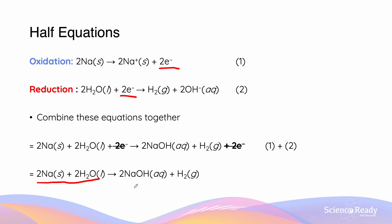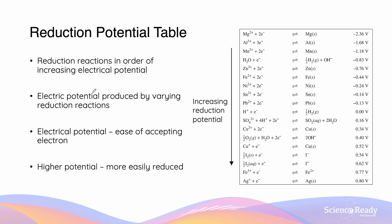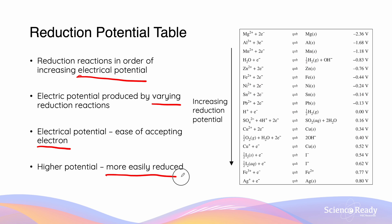The reduction potential table demonstrates reductions for various substances in order of increasing electrical potential. The electrical potentials produced from varying reduction reactions differ — the electrical potential represents the ease of accepting an electron. The higher the electrical potential for the reduction half equation, the more easily reduced that substance is going to be. So this means that silver, which has the highest reduction potential, is going to be the most easily reduced of the substances on the table.